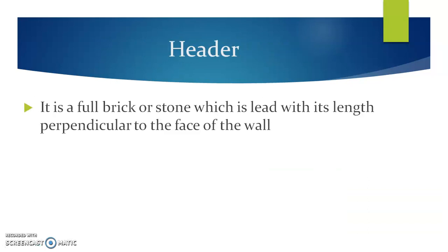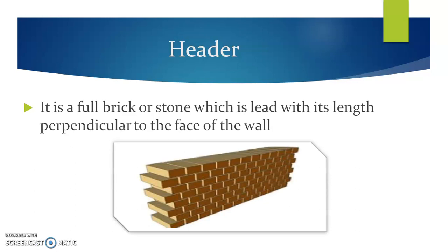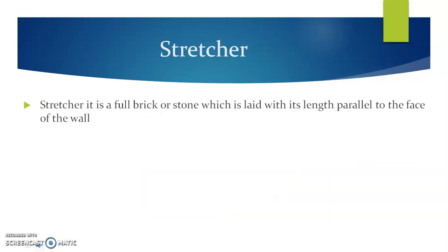Next is header. A header is a full brick or stone which is laid with its length perpendicular to the face of the wall. This figure shows the units placed as a header. You can understand that the length of such blocks or headers are perpendicular to the direction or face of the wall.